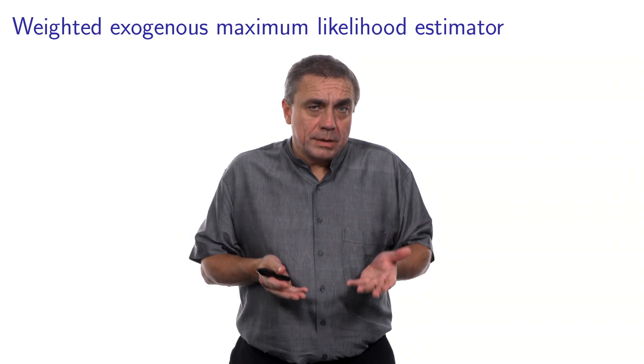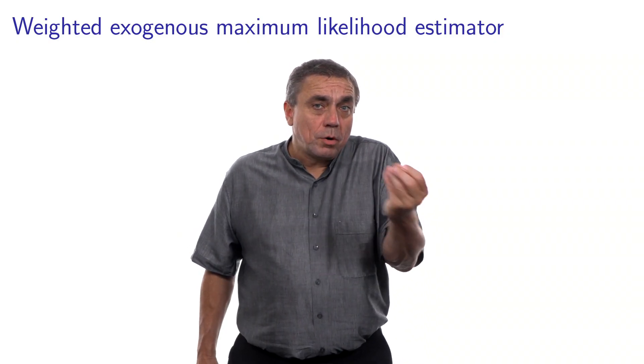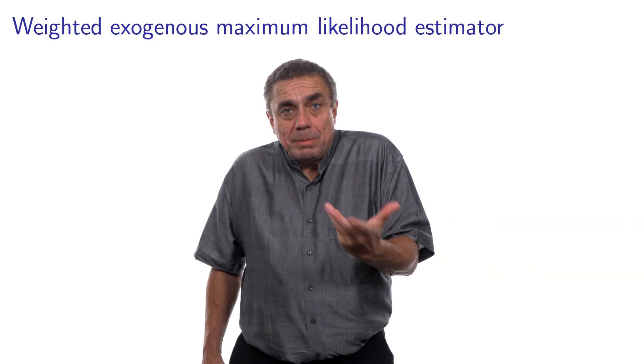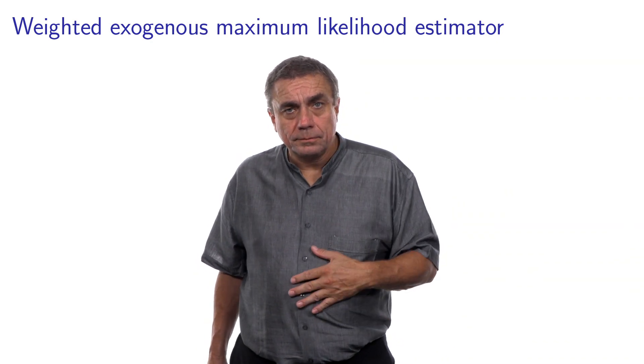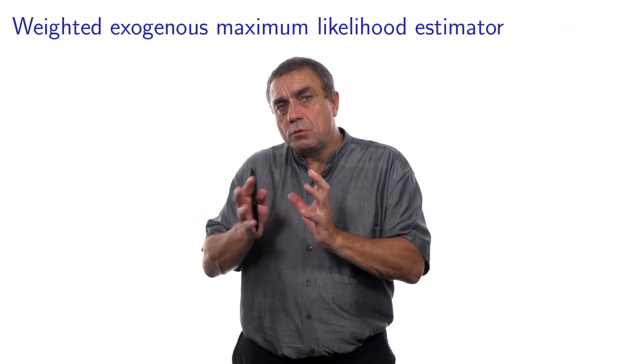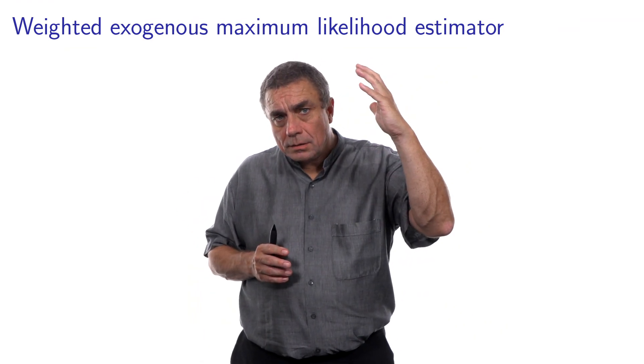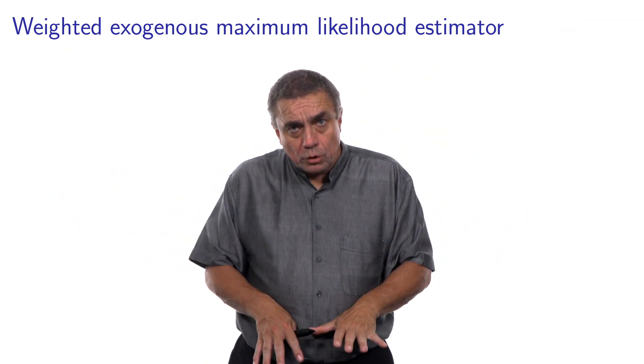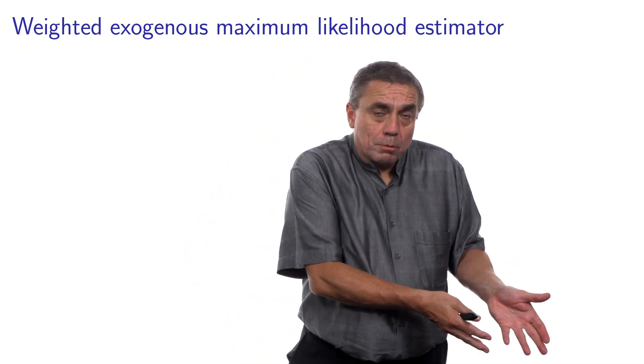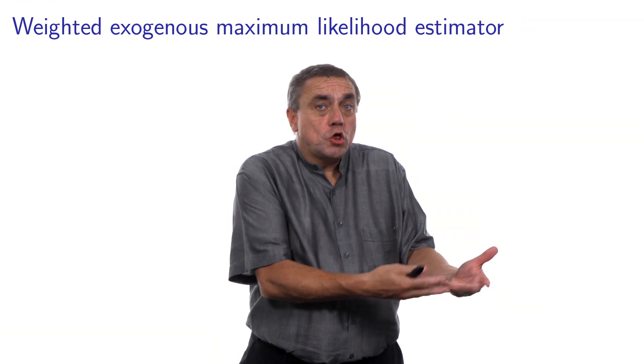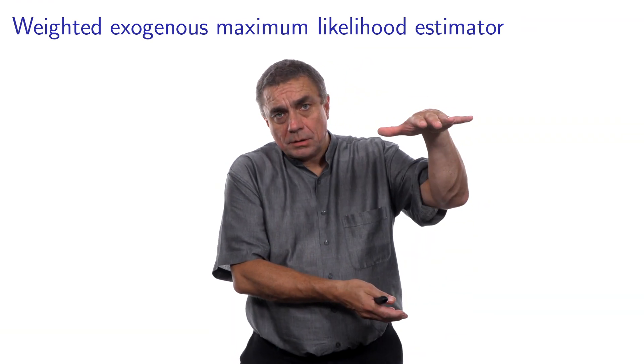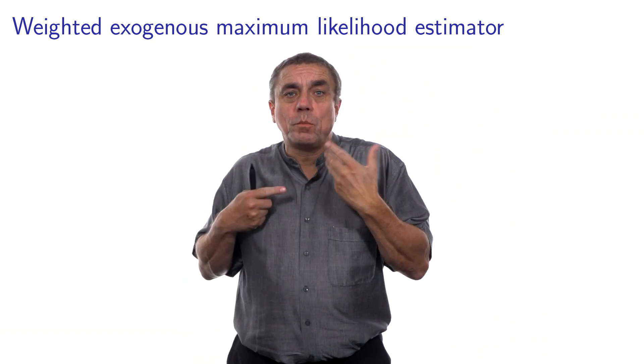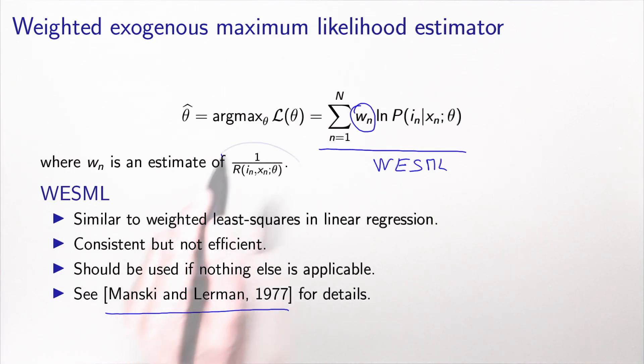What is the weight? The intuition behind the weight is that the role or the importance of a given individual in the sample should be inversely proportional to the probability for this person to be selected in the sample. If people with some configuration have a high probability to be selected, they will likely be overrepresented in the sample, and we will have to put a low weight. But if some people have a low probability to be selected, they are likely to be underrepresented in the sample, and we need to associate them with a high weight. The definition of the weight is simply the inverse of the probability to be selected in the sample, which is this quantity here.